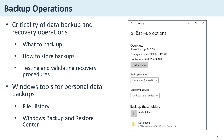An important question is how to store backups. There are various methods including external hard drives, network attached storage or NAS, the cloud, or even tape for large data sets. The 3-2-1 rule is often recommended, which means keeping at least three copies of your data — storing two backup copies on different storage media, with one of them located off-site.